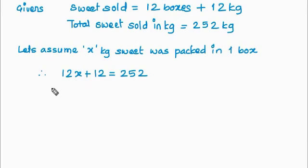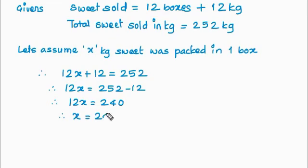So using transposition method, we will solve this. First we will move 12 this side. Now we have to move this 12 this side. So this is multiplied here. So when it goes there, it will become divided by. And therefore x is equal to 20.